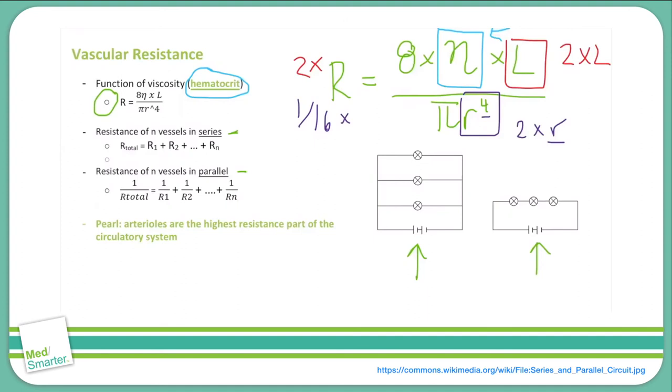So let's take a look. For circuits in series and vessels in series, we can simply add up the individual resistances to get the total. And for vessels in parallel, we can add up the inverses of the resistances—that will give us the inverse of the total resistance.